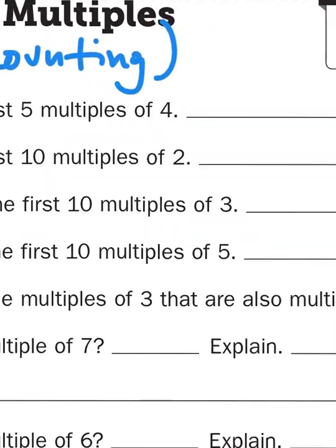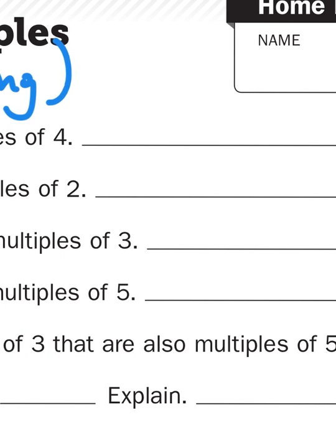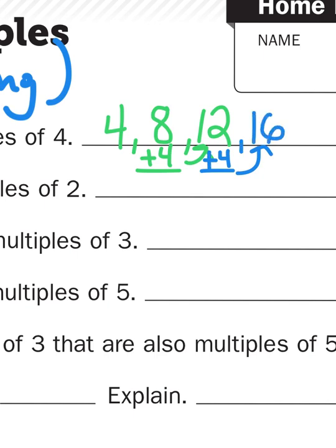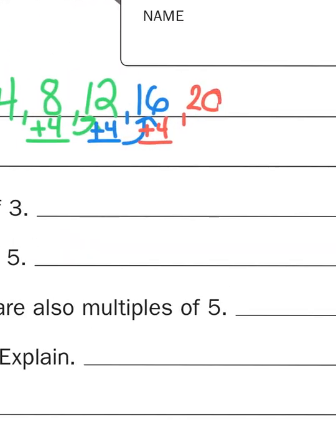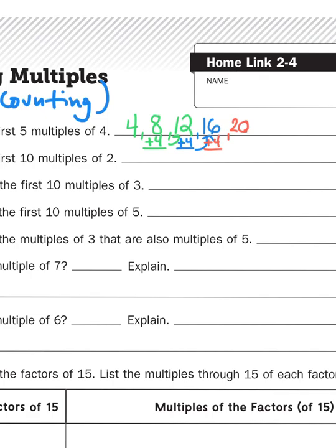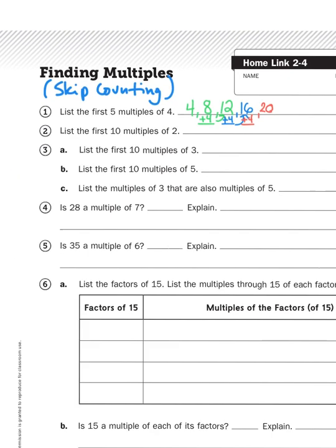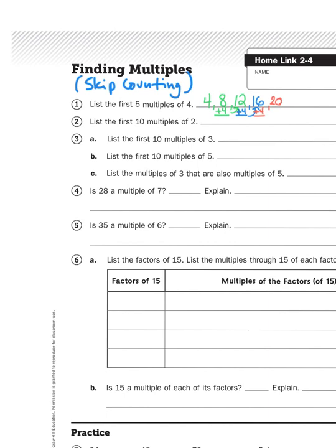So here where it says, list the first 5 multiples of 4, the first number I'm going to start with is 4, and then the next number is going to be 4 plus 4. 4 plus 4 gives me 8. Now 8 plus 4 would give me my third multiple, which is going to be 12. And then 12 plus 4 is going to give me my fourth multiple, which is 16. 16 plus 4 is going to give me my fifth multiple, which is 20. So the idea here is that with each number I add to this list, I'm just adding 4 to it. That's what a multiple is. I'm skip counting by that number.